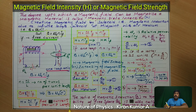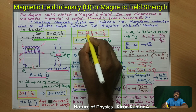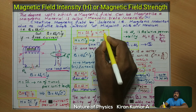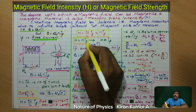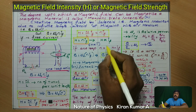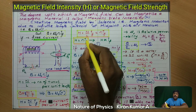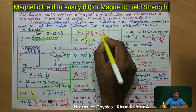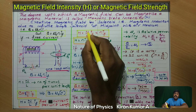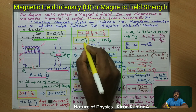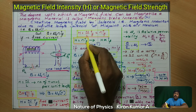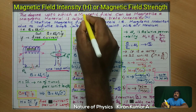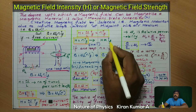So H = (N/L) × If, where small n = N/L. Therefore, we can write H = n × If. This is the magnetic field intensity. Magnetic field intensity is directly proportional to the free current. For a single loop where n = 1, H = If only.